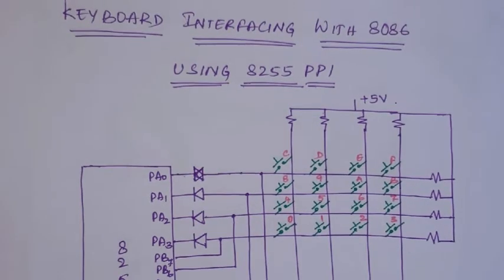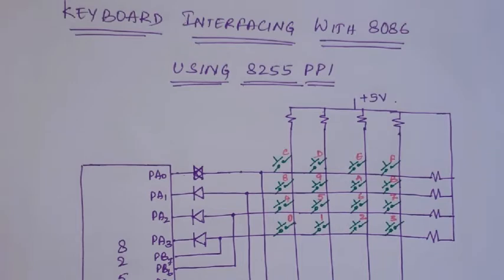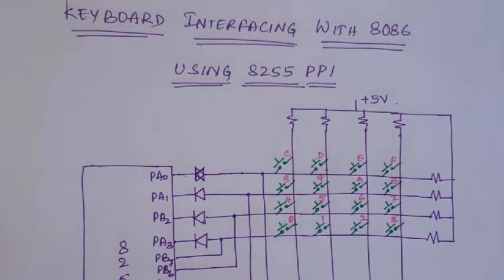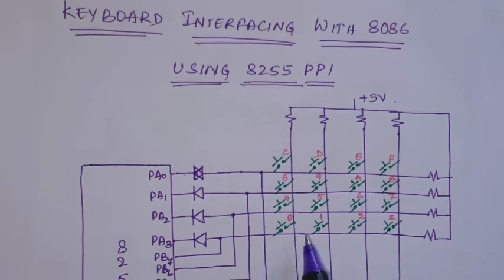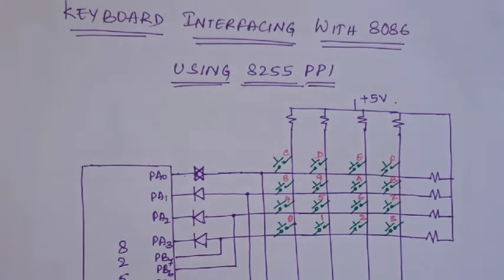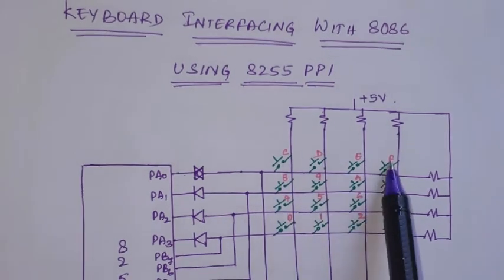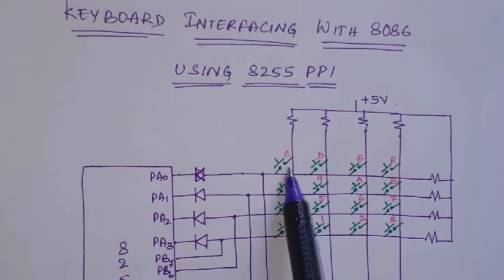Let's discuss a hexadecimal keyboard. To give a hexadecimal input you require 16 keys, from 0 to F. Instead of connecting 16 keys to 16 port pins, the keys are arranged in a 4x4 matrix format so that the number of port pins required to interface this keyboard is reduced. The 16 keys are arranged in the form of a four-by-four matrix.